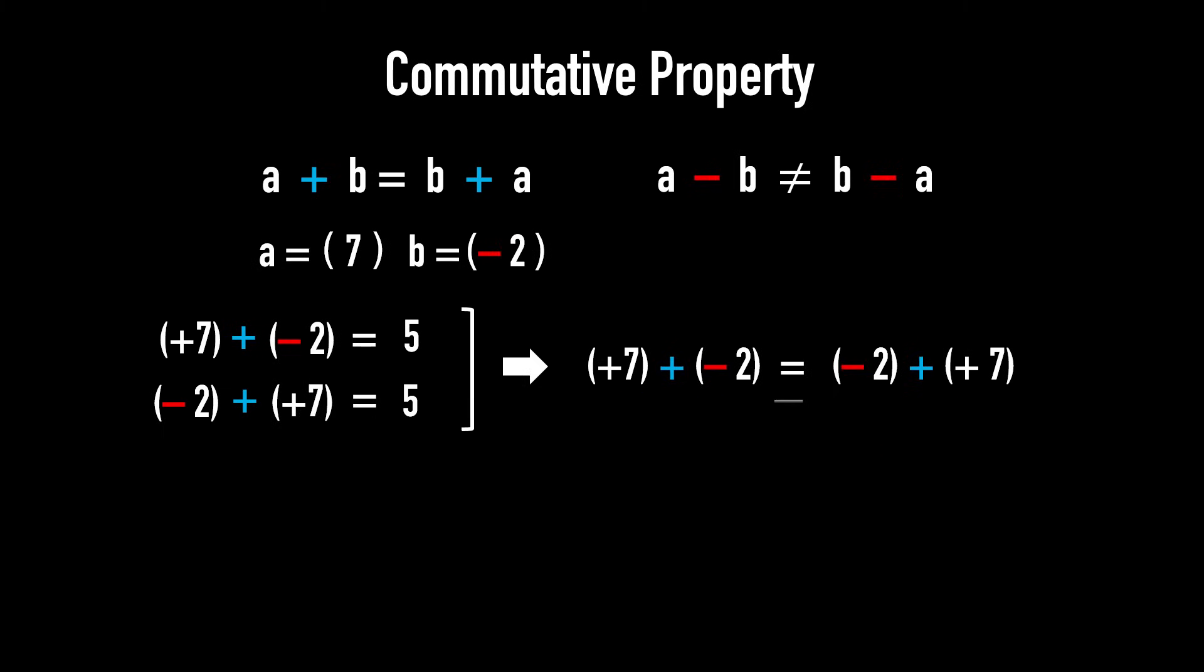Now, rewrite that equality without parentheses. 7 minus 2 equals minus 2 plus 7. This shows that when you change the order in an expression like 7 minus 2, you must include the minus sign with the 2. In general, a minus b equals minus b plus a.